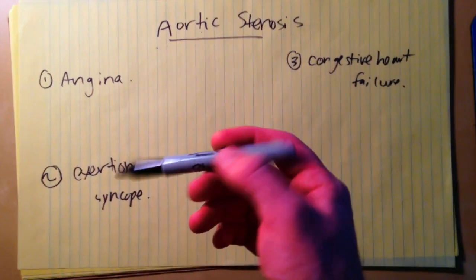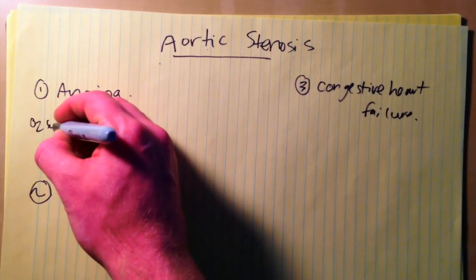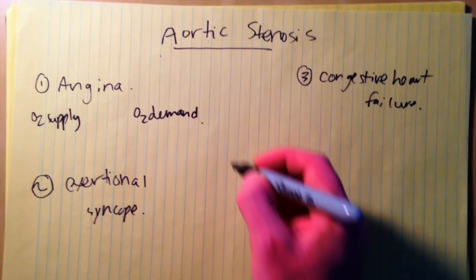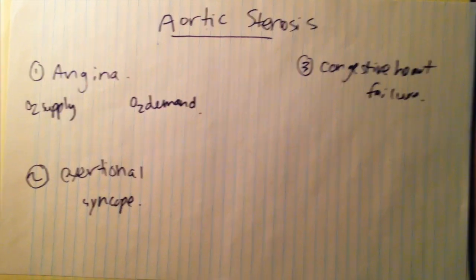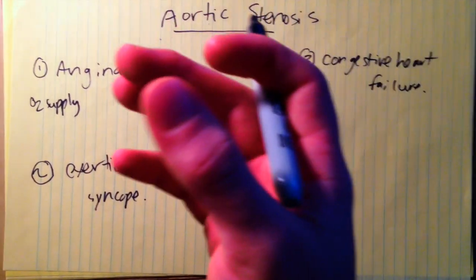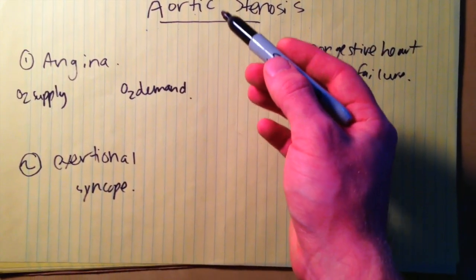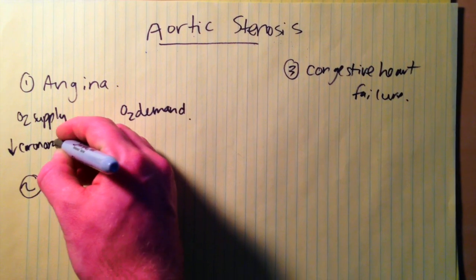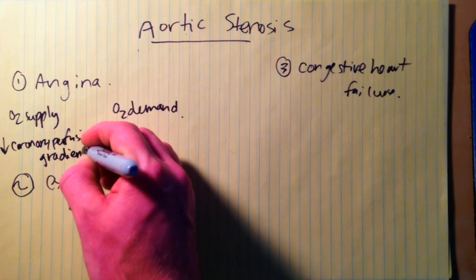With angina, we can look at our determinants of oxygen supply to the myocardium and oxygen demand to figure out why in aortic stenosis there's an imbalance. We get a decrease in myocardial oxygen supply because the pressure inside the left ventricle during systole and diastole is going to increase as the heart pumps against that fixed obstruction of the aortic stenosis, causing a decrease in the coronary perfusion gradient, which is a major determinant of myocardial oxygen supply.